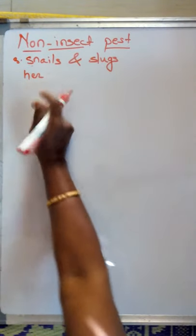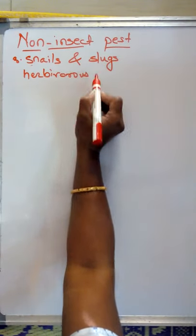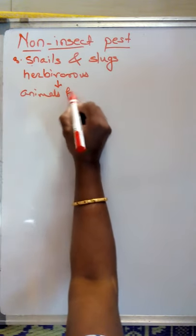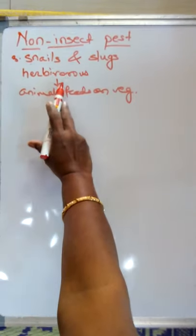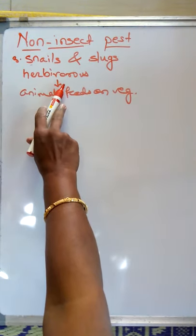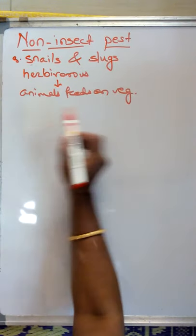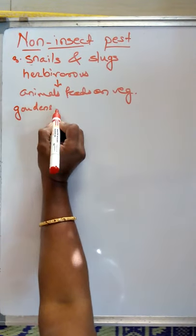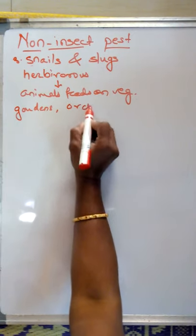Snails and slugs are non-insect pests — they are actually invertebrate animals. These invertebrate animals are herbivorous, meaning they feed on vegetable material as their food. Since snails and slugs are herbivorous, they damage different types of plant material.